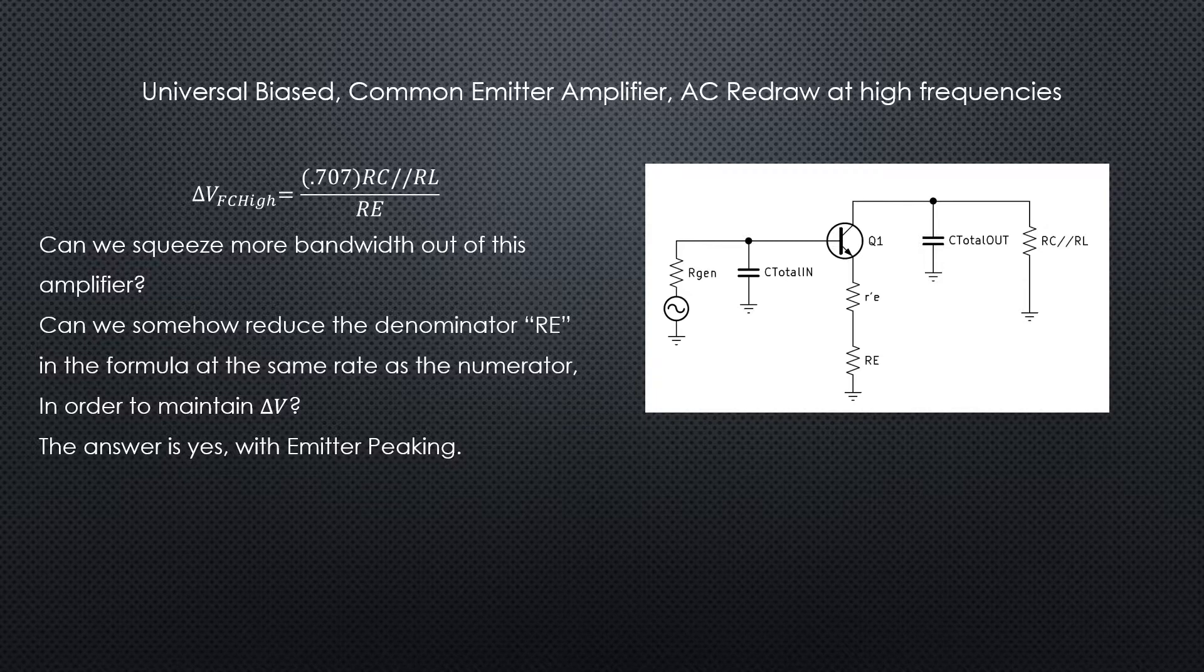But there might be something we can do in the denominator, something more obvious we could do in the denominator with re. So if we could bring re down in the denominator at the same rate that the numerator is falling, we would be able to essentially keep our delta V or voltage gain the same as it's coming down.